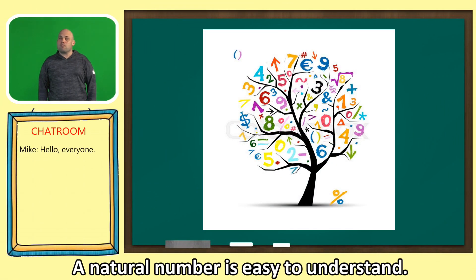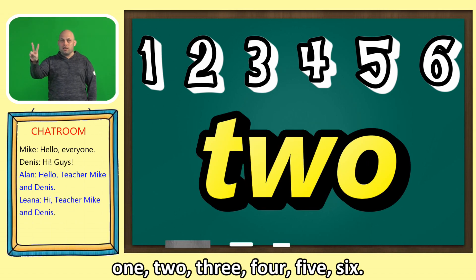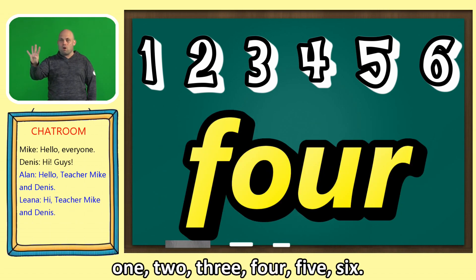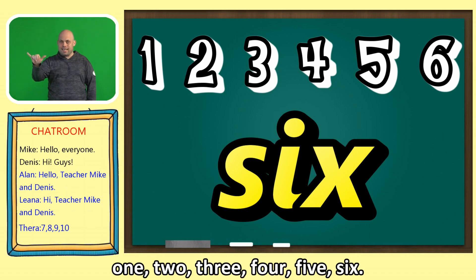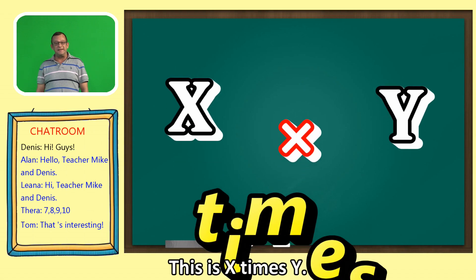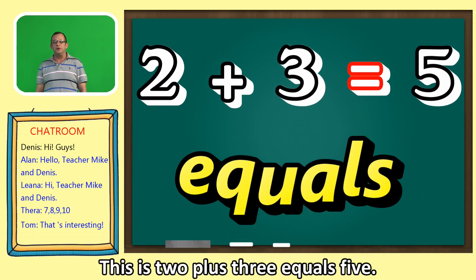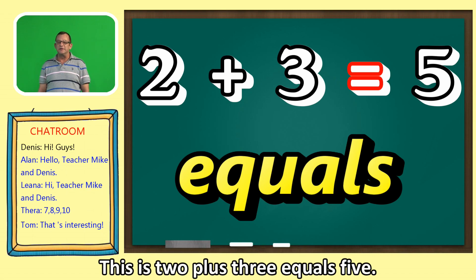A natural number is easy to understand: 1, 2, 3, 4, 5, 6. This is x plus y. This is x times y. This is 2 plus 3 equals 5.